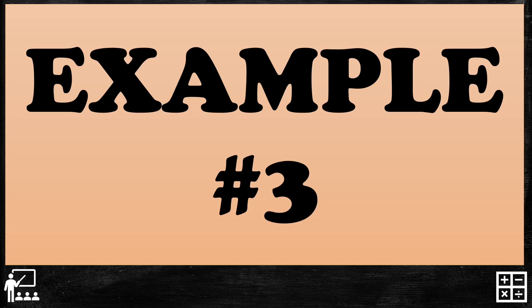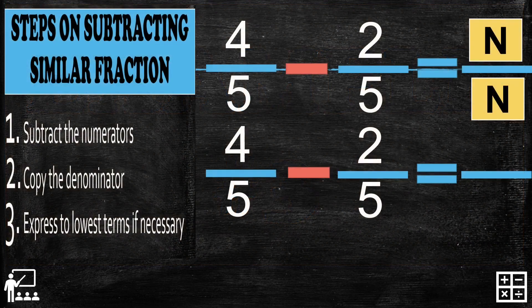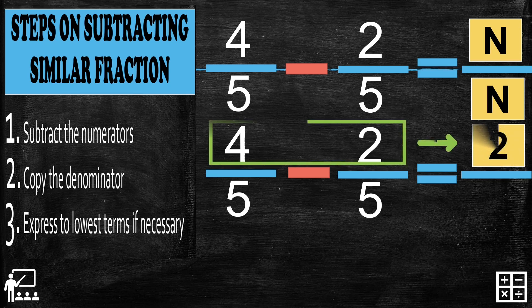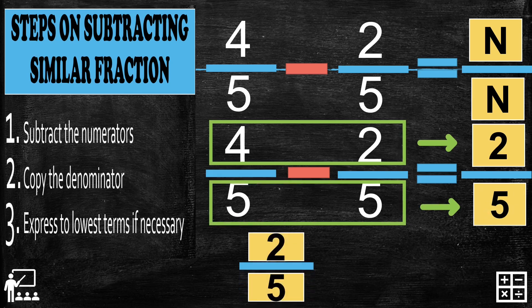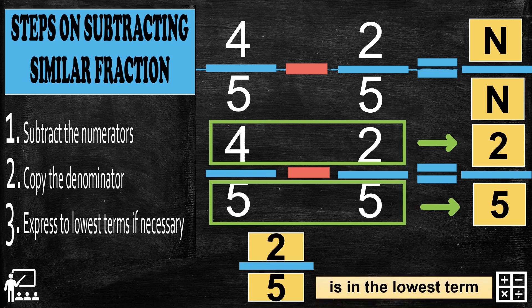Last example for subtracting similar fractions. Subtract the numerators — the numerators are 4 and 2, so 4 minus 2 gives you 2. Copy the denominator, which is 5. So 2 fifths is already in lowest terms, so we don't need to find their GCF.